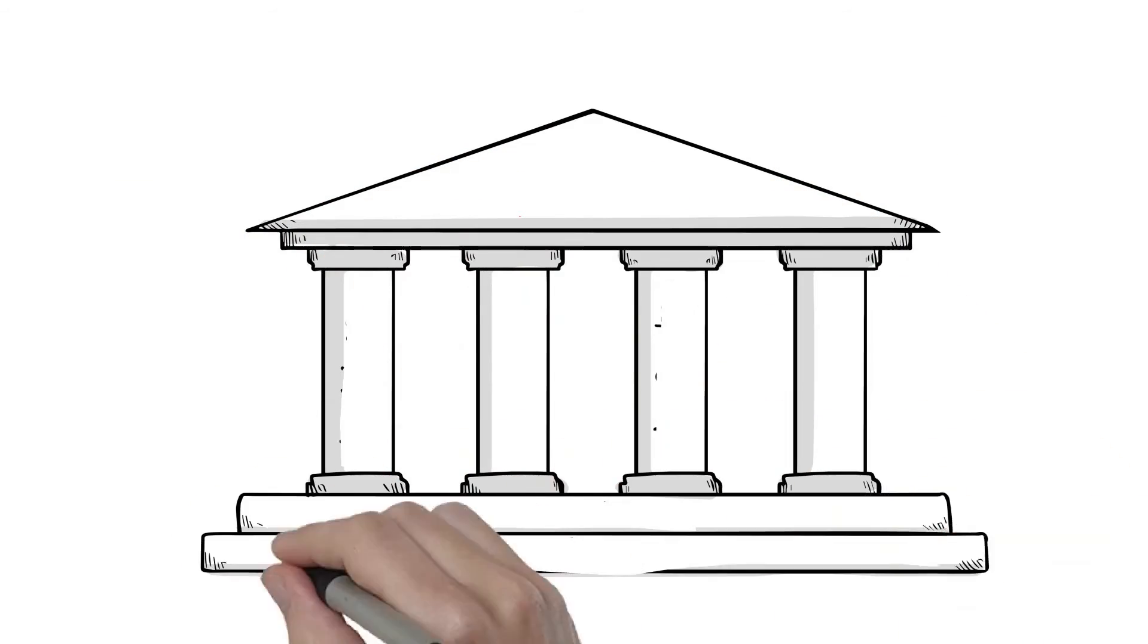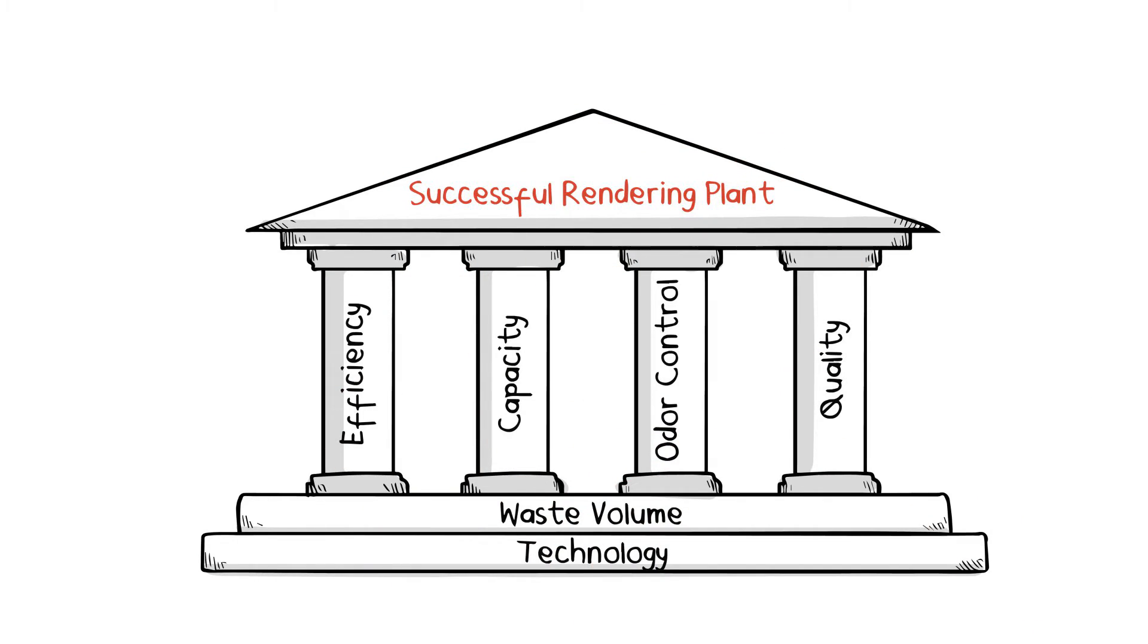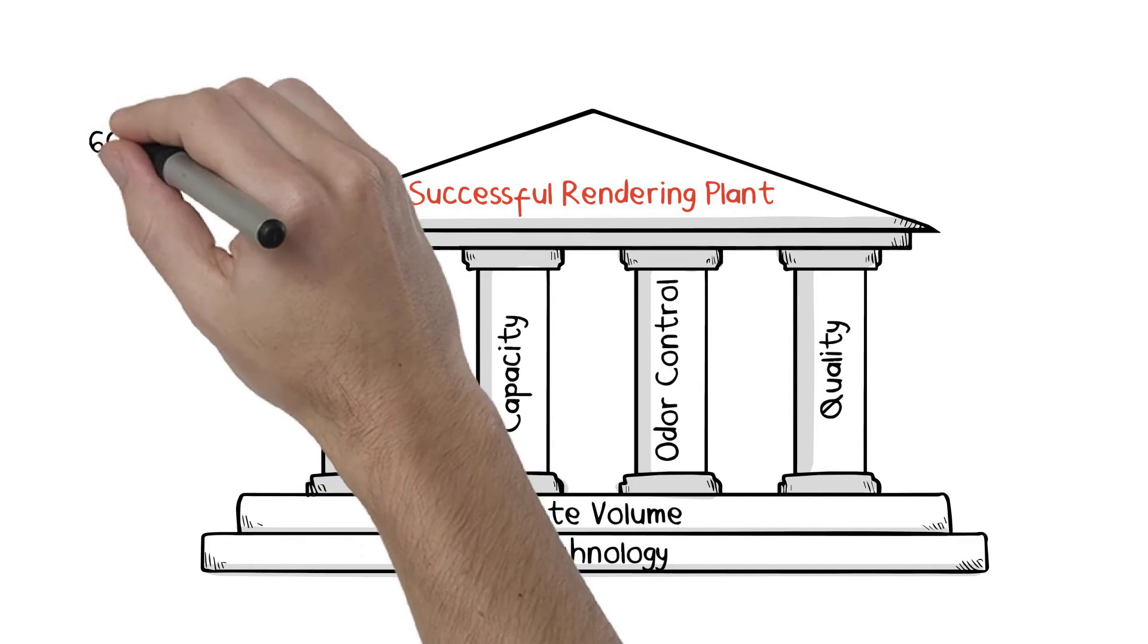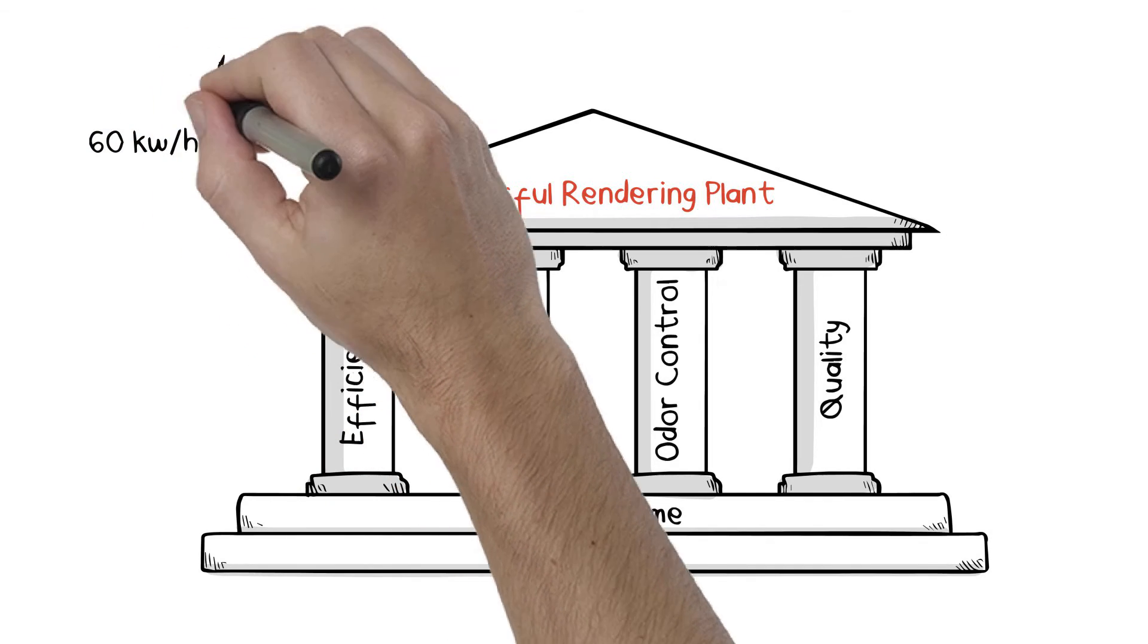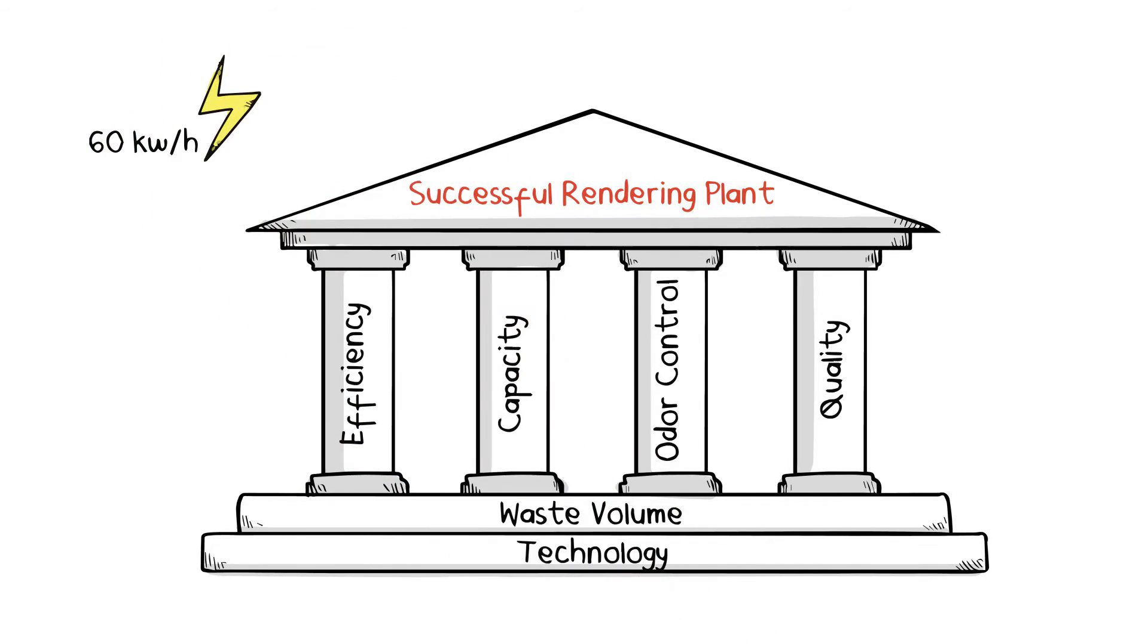Our compact rendering plant fulfills the four pillars of a successful rendering plant. 1. Efficiency, with a minimal energy consumption, either 60 kilowatts per hour or 600 kilograms per hour of steam.